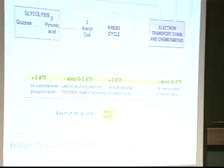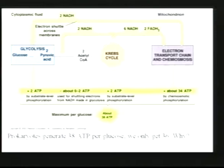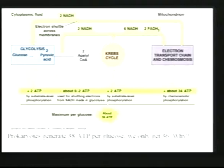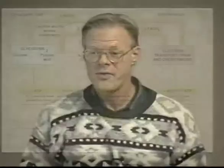We say 'about' because other conditions may alter how much ATP you get per glucose. If you're cold, you're going to be generating more heat than ATP — cells can just let those ions flow back across without generating ATP; that generates heat and warms you up. The maximum per glucose if you're a prokaryote is 38 ATPs; the maximum for a eukaryote is about 34 to 36 ATPs. The reason is we have to use two ATPs to shuttle products from the grooming stage across the mitochondrial membrane.